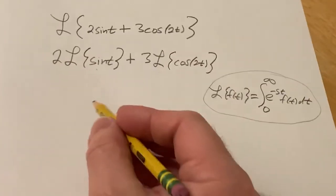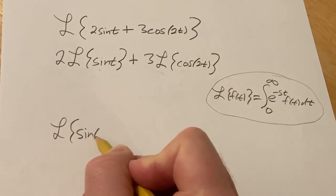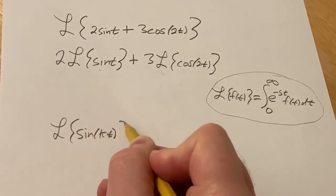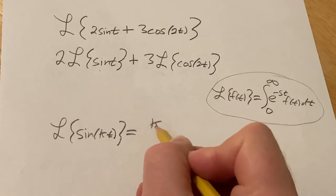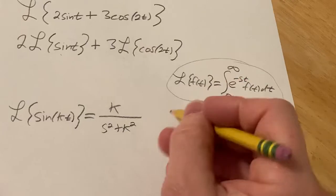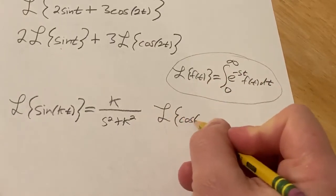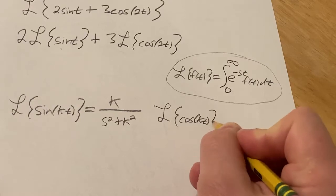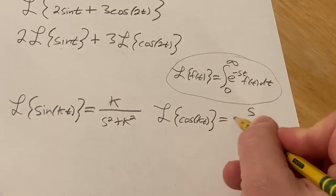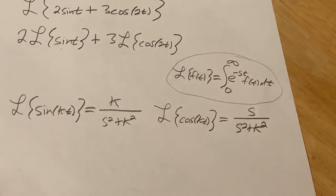So recall that the Laplace transform of the sine of kt is equal to k over s squared plus k squared. And then the Laplace transform of the cosine of kt, that's equal to s over s squared plus k squared.